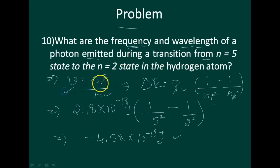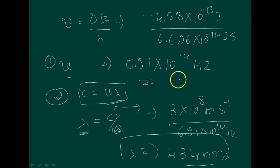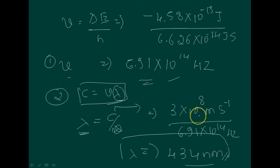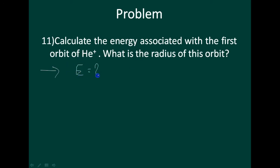In summary, to find frequency and wavelength: use v equals delta E by h, first calculate delta E using the formula with RH and Planck's constant, then apply lambda equals c by v to get the wavelength. The next problem asks: calculate the energy associated with the first orbit of helium, and what is the radius of this orbit?